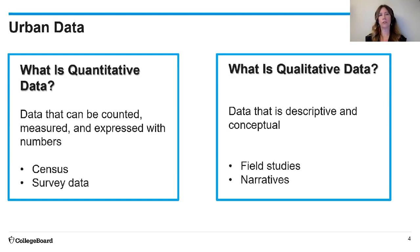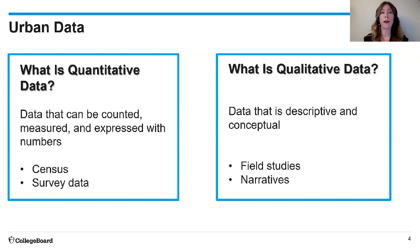Let's deconstruct what quantitative and qualitative data really are. Quantitative is something that can be counted, measured, and expressed with numbers. We get this information from the census or from surveys. For example, how many people live in your town or city? How many women are there? How many men? That would be data that can be counted, measured, and given a numerical value.